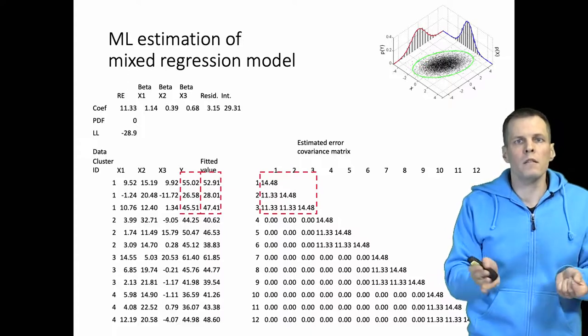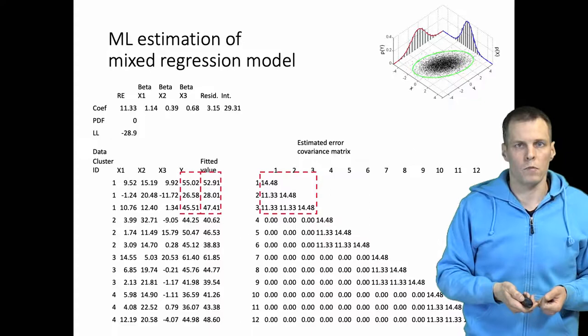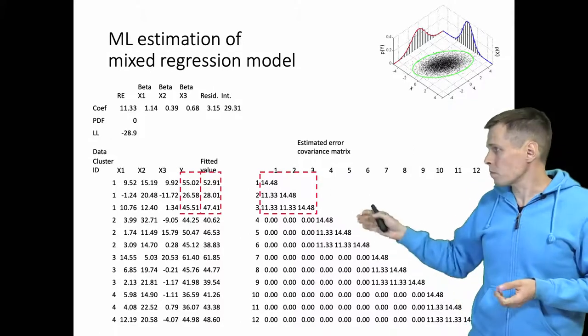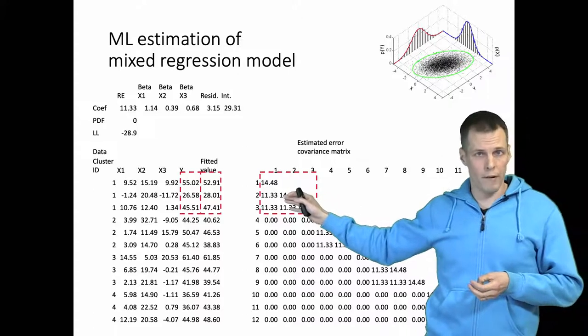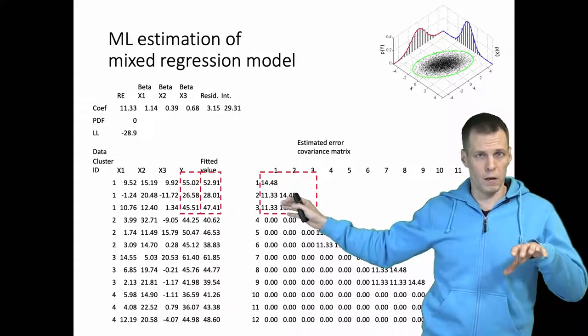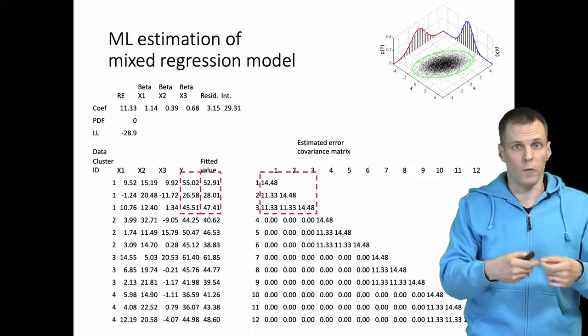So how do these error covariance structures relate to this estimation approach? Well, normally when we have a random intercept we get this constant covariance between the observations within a cluster. That is the effect of the random intercept.